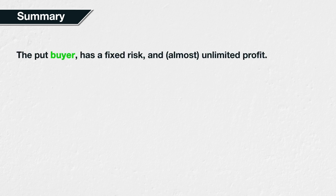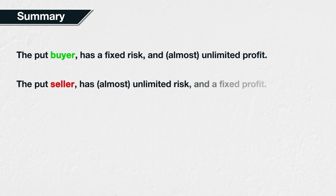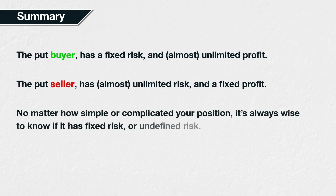In summary, the buyer of a put option has a fixed risk, and a profit that is only limited by the underlying price reaching zero. The seller of a put option has a risk only limited by the underlying price reaching zero and a fixed maximum profit. Whether trading call options or put options, or a combination of both, it is always wise to be aware of where your risk lies. It is also important to be aware of the potential magnitude of that risk in a worst case scenario, i.e. your maximum loss.